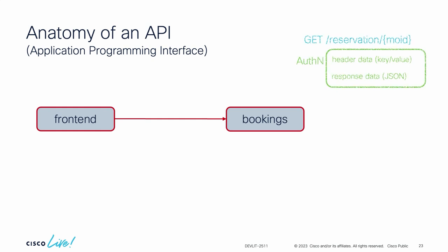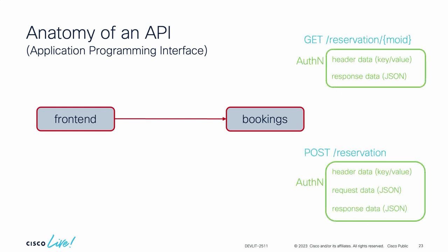On the API side, when we talk about API security there are traditional security concepts — can a source talk to a destination based on source IP and destination IP? But in this session I'm going to focus on the API endpoint side. When I publish a service, using a sample application where the front end talks to a booking service, that booking service might have reservation capability — for example, a GET reservation endpoint to retrieve a specific reservation, or a POST endpoint to create a new reservation.